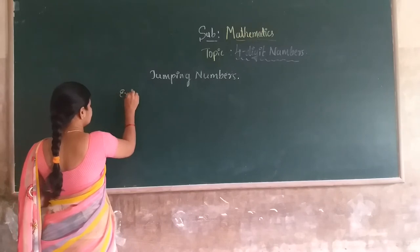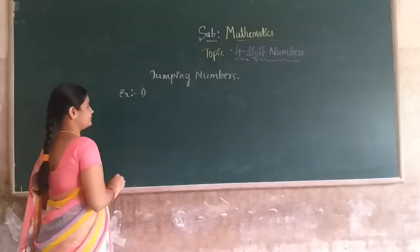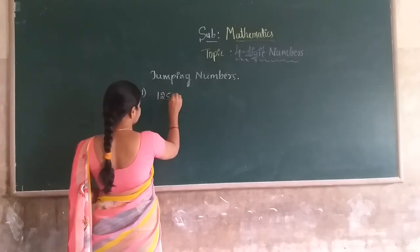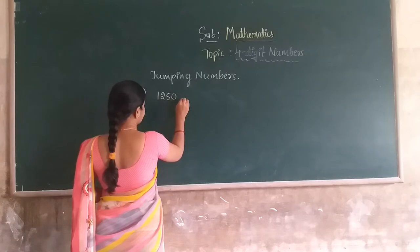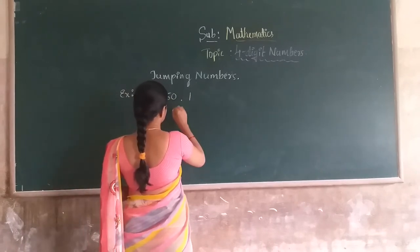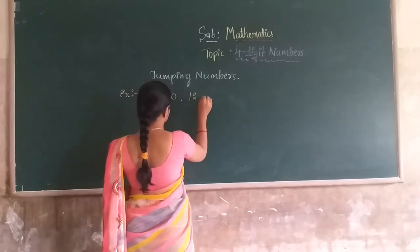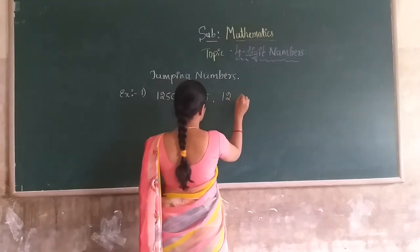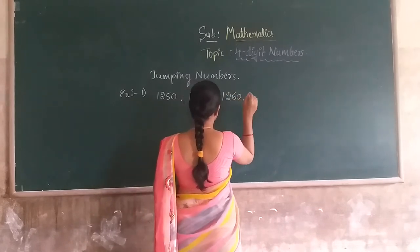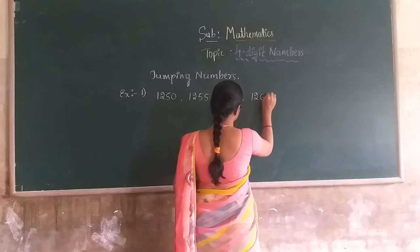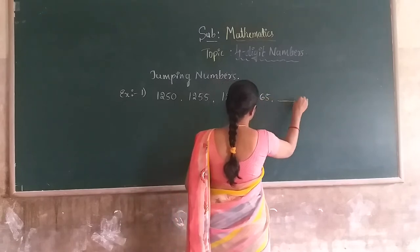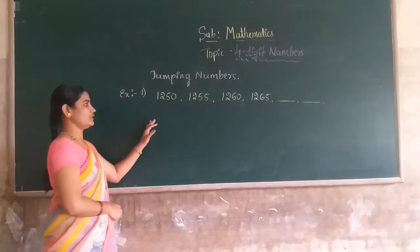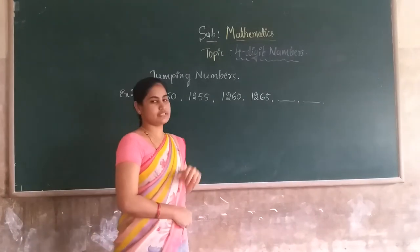Example 1. I will give you a series of four distinct numbers: 1250, 1255, 1260. Dear students, I will show you this example for the series of four distinct numbers.